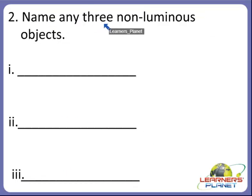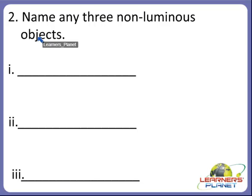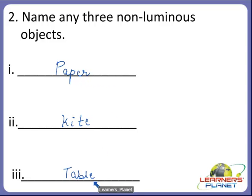Now name any three non-luminous objects. Non-luminous objects means the objects that do not give light on their own. The first one is paper, then kite, then table. So these are some non-luminous objects. You can write other names also, like bed, chair, etc., that do not give light.